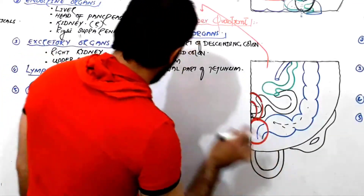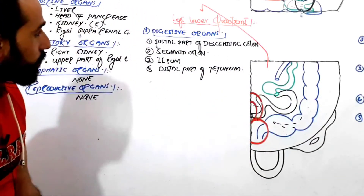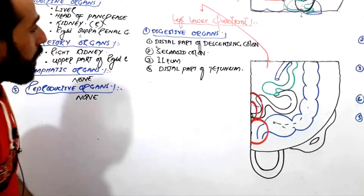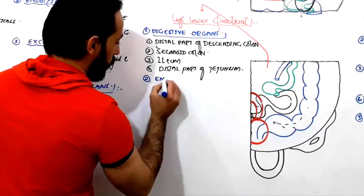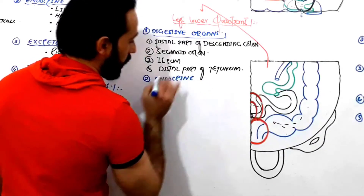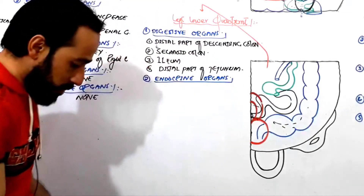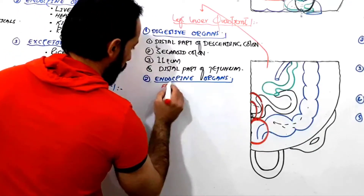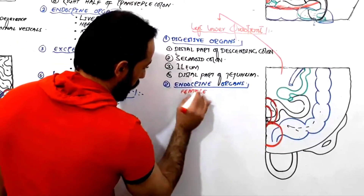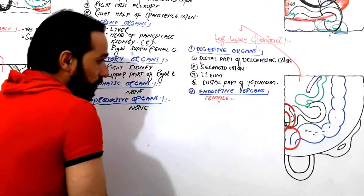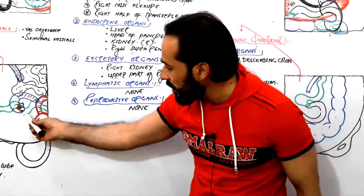That covers the digestive organs. The next group of organs present in the left lower quadrant are the endocrine organs. Are there any endocrine organs there? Yes. If we talk about both sexes — if we talk about females, what will be there, and if we talk about males, what will be there. In the case of females in the left lower quadrant, we can see that the ovary is present there.